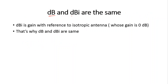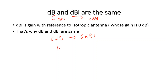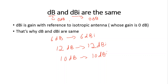dB and dBi are the same. Decibel is taken with respect to 1, or 0 dB. Similarly, dBi represents the gain of an antenna with reference to an isotropic antenna, and the gain of an isotropic antenna is also 0 dB. So dB and dBi are equivalent. For example, 6 dB equals 6 dBi, 12 dB equals 12 dBi, and 10 dB equals 10 dBi. There is no difference between dB and dBi for antenna gain.